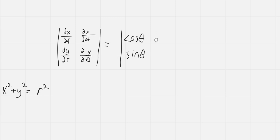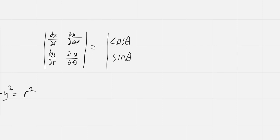And then the partial of x with respect to theta will be negative r sine theta, and the partial of y with respect to theta is r cosine theta.